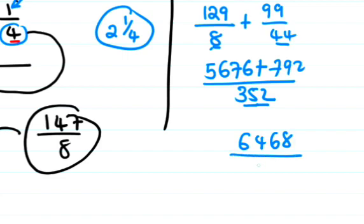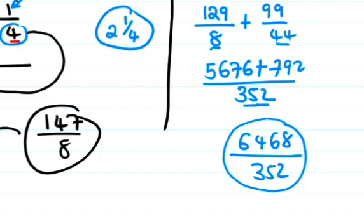Adding 5676 plus 792 gives 6468, divided by 352. When we convert 6468/352 to a mixed number, we get 18 with remainder 147, so that's 18 147/352, which equals 18 3/8.